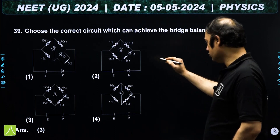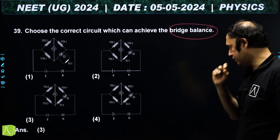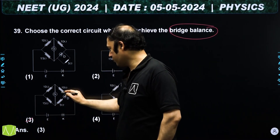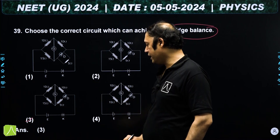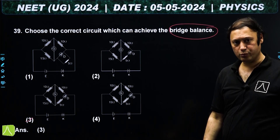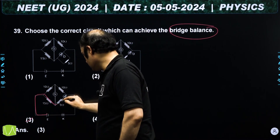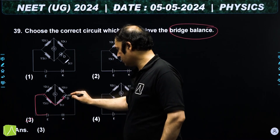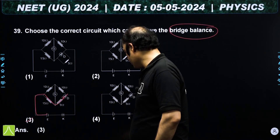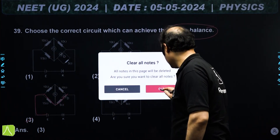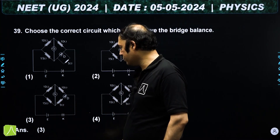Question 39: in which case is the Wheatstone bridge balanced (galvanometer deflection zero)? First, check whether the diode is in forward bias or reverse bias. The battery pushes charges in a direction — if the current arrow aligns with the diode arrow, it is forward bias, and the diode allows current to flow.